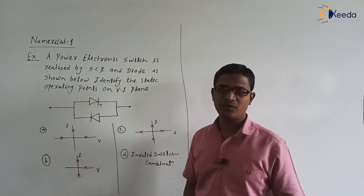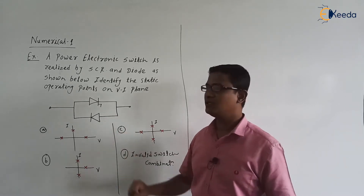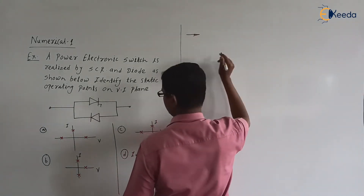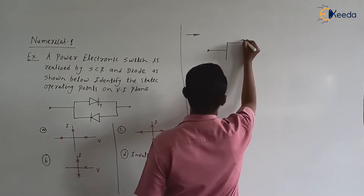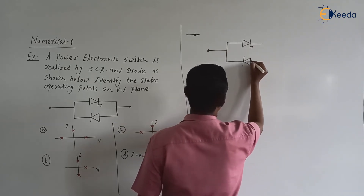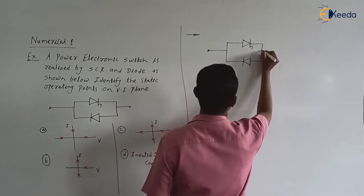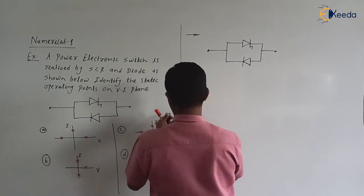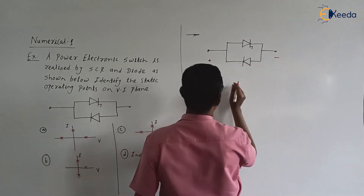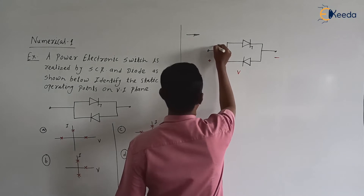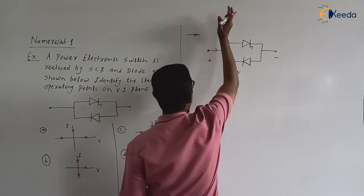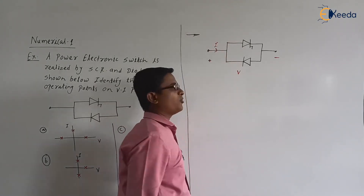From the given options, let us redraw the switch. In the switch we are having SCR connected in anti-parallel with a diode. Suppose this indicates the positive voltage for the switch — plus here, minus here. And suppose this indicates the positive current for the switch.